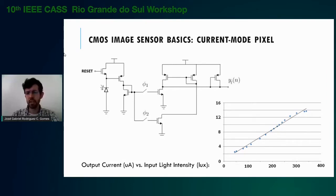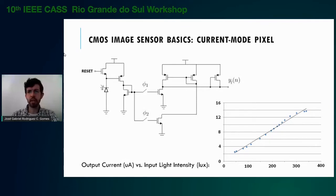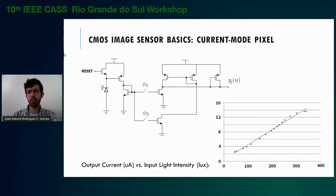To extend the dynamic range, voltage mode logarithmic pixels exist. They exploit the sub-threshold time-continuous operation of the reset transistor to collect a single cathode voltage sample proportional to the logarithm of the incident light intensity.